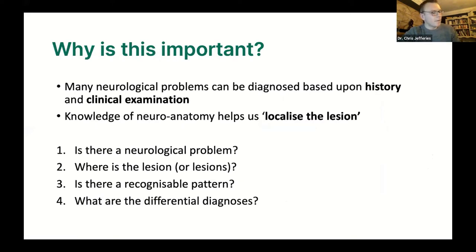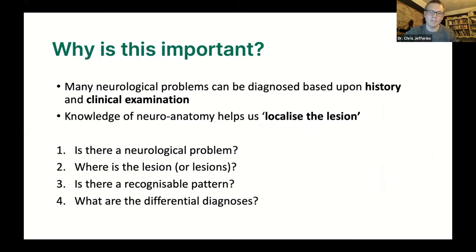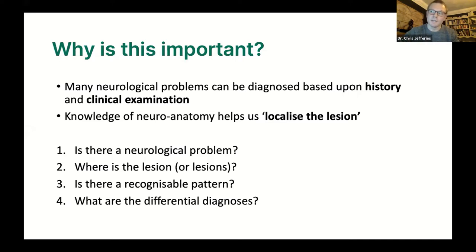Why is the neurological examination important? Neurologists will tell you that most neurological problems can be diagnosed from the history and clinical examination alone, before looking at an MRI. Knowledge of neuroanatomy helps us localize the lesion — roughly working out whereabouts in the nervous system the problem is, based on history and signs. When posed with a patient with a neurological complaint, it's worth thinking: Is there a neurological problem? Where is the lesion? Is there a recognizable pattern? What are the differential diagnoses?